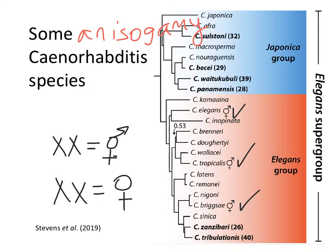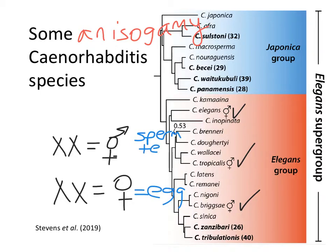Coming back to the phylogenetic tree, we've got two different kinds of females. XX equals female — those females only produce eggs. And the hermaphrodites in Caenorhabditis produce both sperm and eggs. That's why the hermaphrodite symbol is a combination of the female and male symbols — they're partly female, partly male.